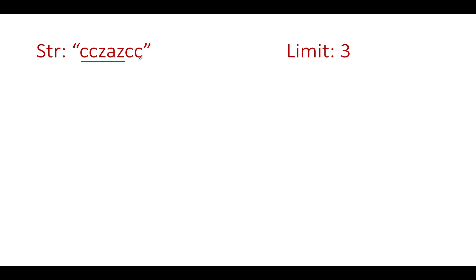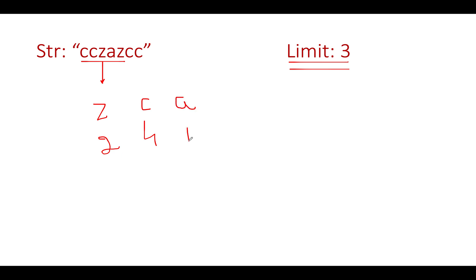Let's take the same example that was specified in the question. The input string is given to us as cczazcc and the limit of characters that can at max stay together happens to be three. We want to generate the lexicographically largest string that could be generated out of this input dataset. We have Z two times, so let's store the frequency of Z which is two. Let's store the frequency of C which is four, and the frequency of A which is one.